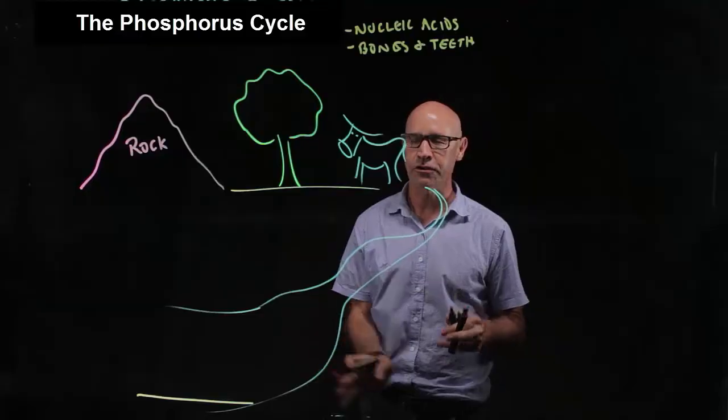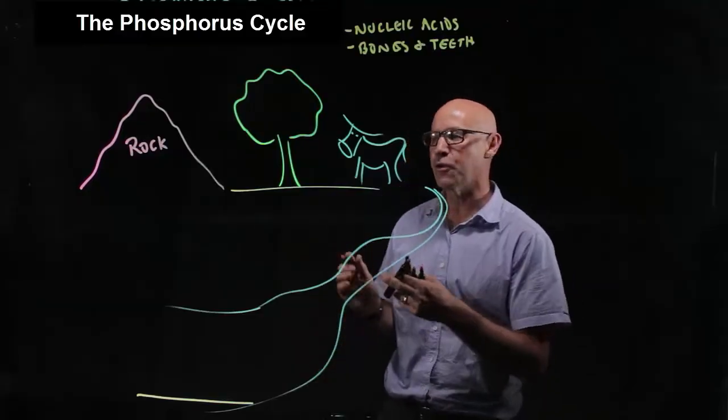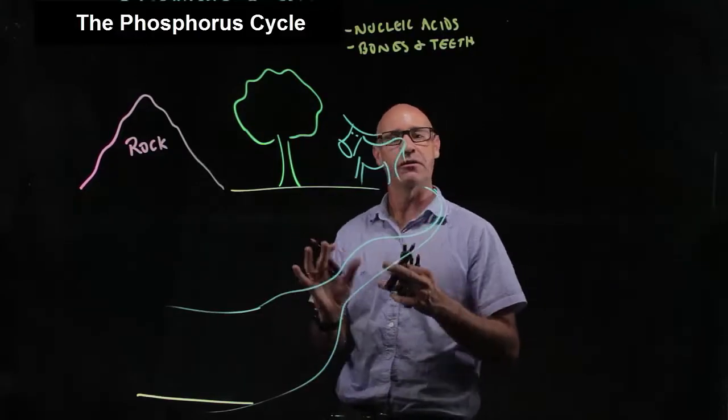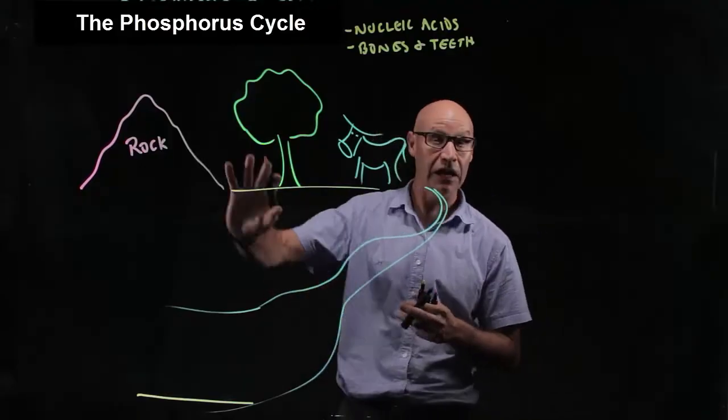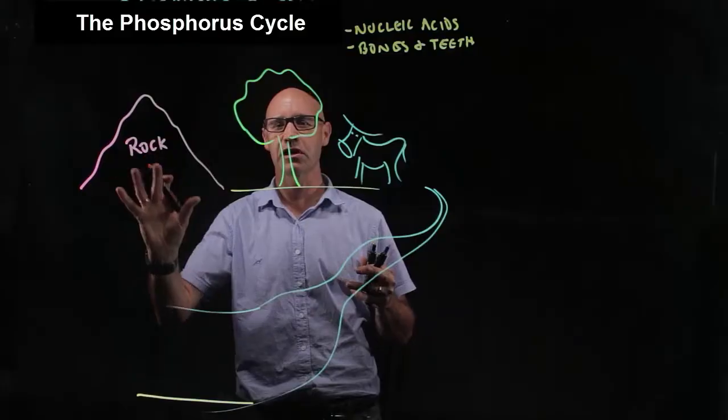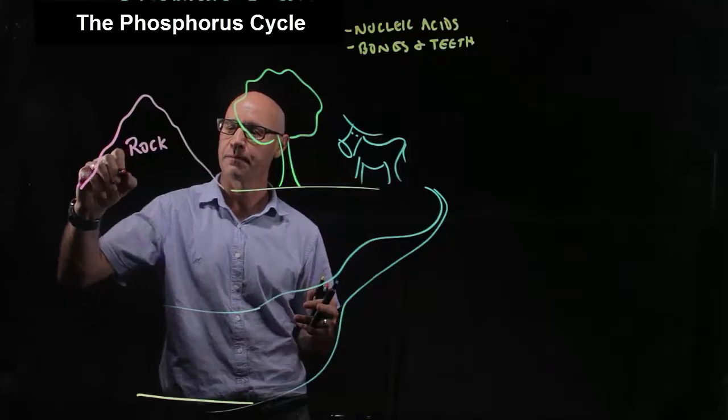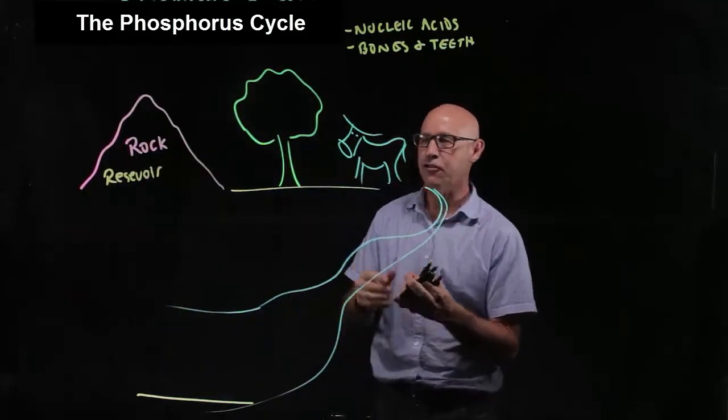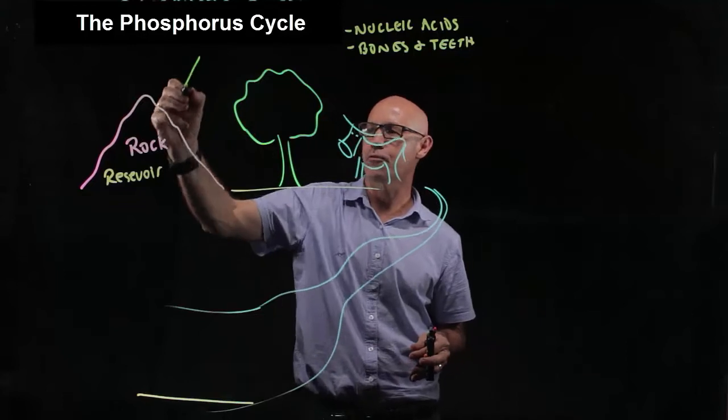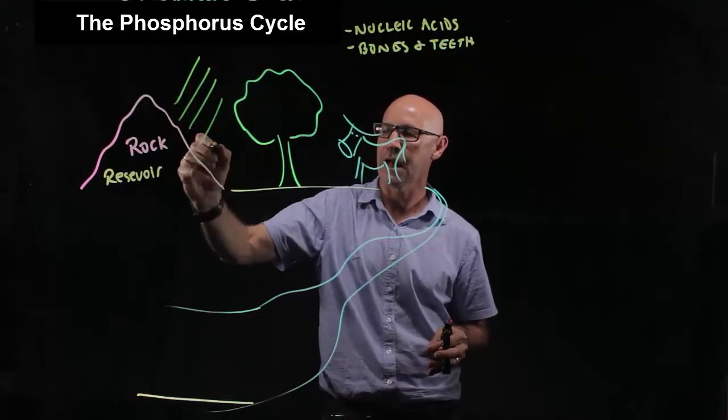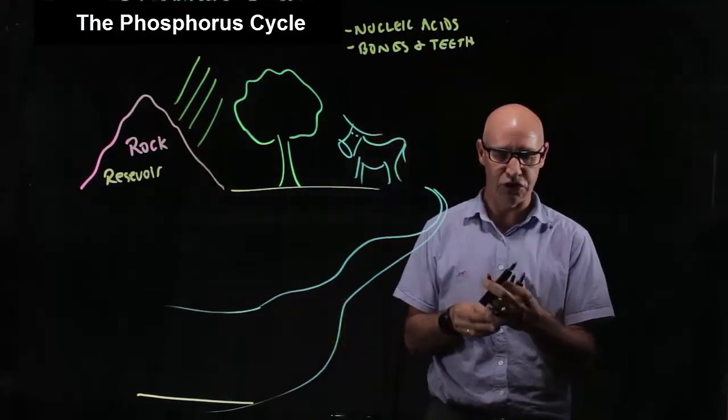Here's the phosphorus cycle. The main reservoir for phosphorus is in rock—a geological reservoir. It is released from that rock primarily through rain and erosion.